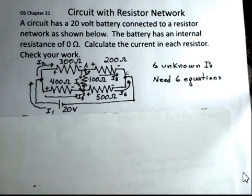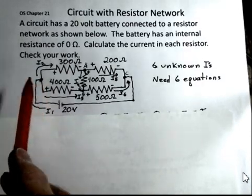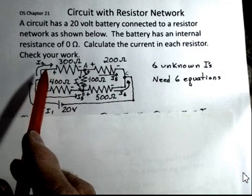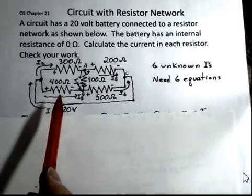So we have a 20-volt battery. Coming out of the 20-volt battery, there's a current I1 up to this junction. At the junction, the current is going to separate into current I2 that goes through the 300 ohm and current I3 that goes through the 400 ohm.